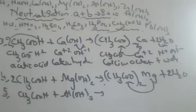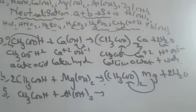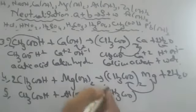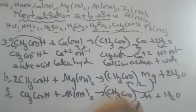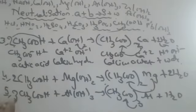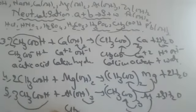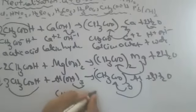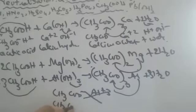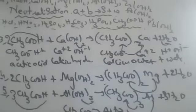Aluminium is plus three, so three acetate ions are needed. The formula is (CH₃COO)₃Al — aluminium acetate. Three acetate ions are there, and three hydrogens on each side balance the equation. This is called aluminium acetate.